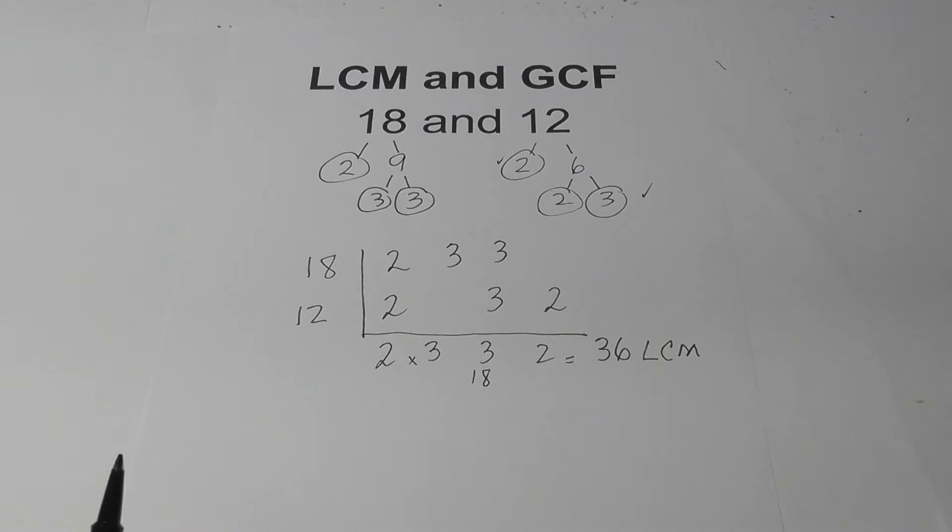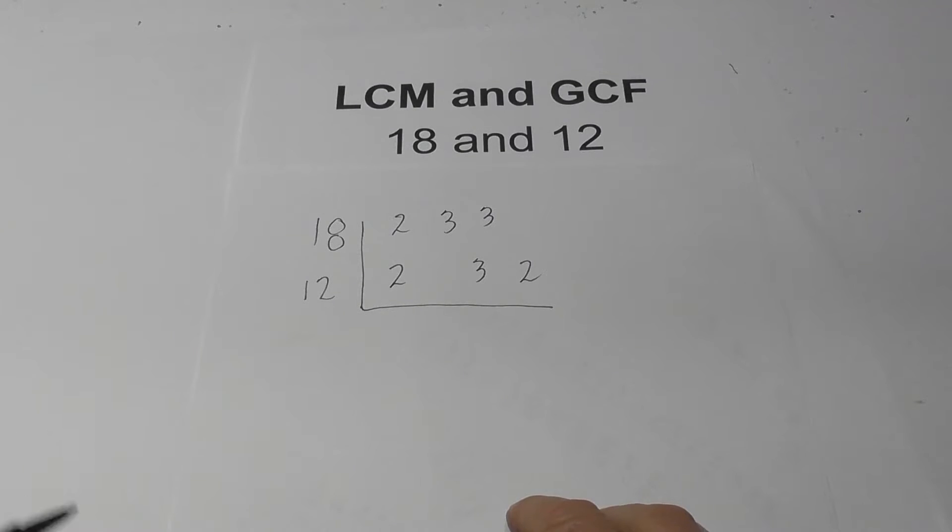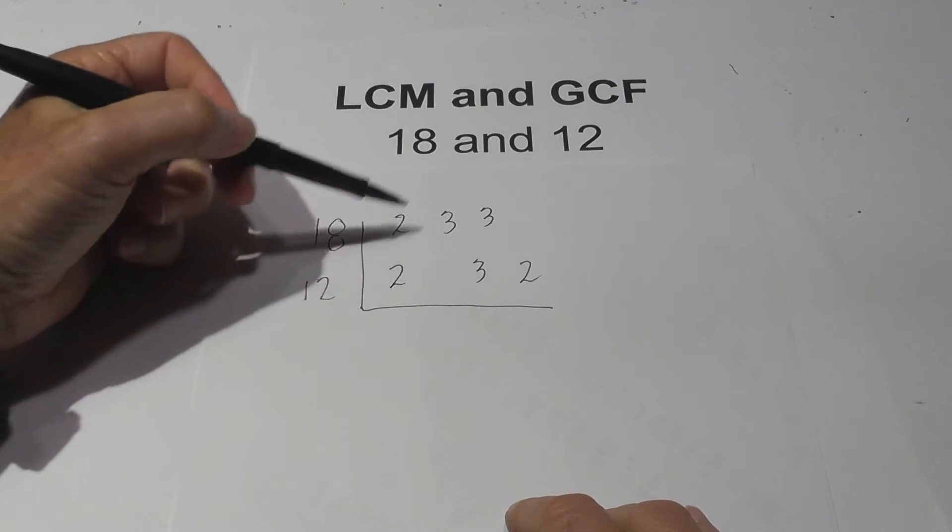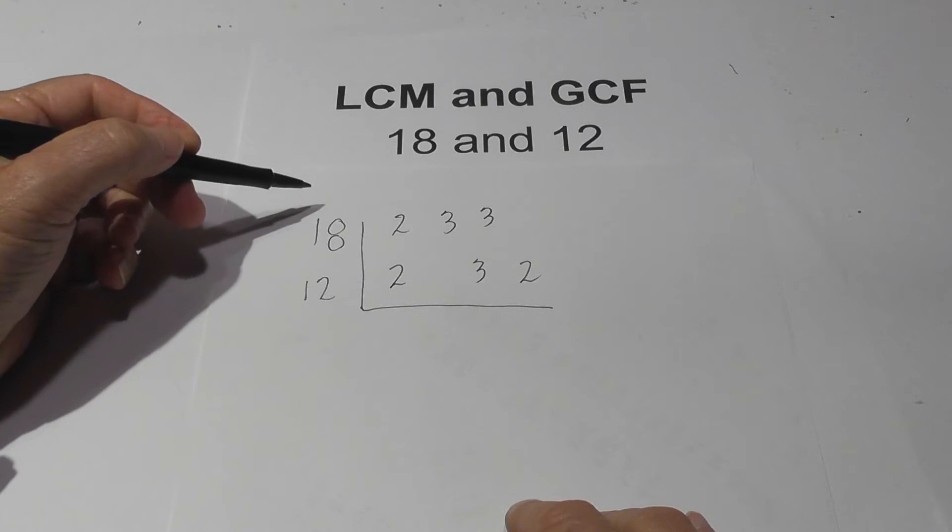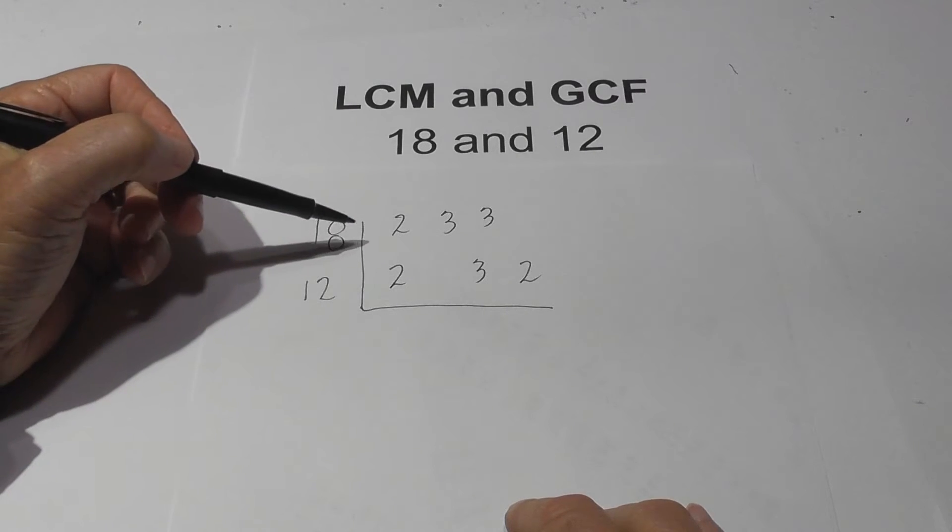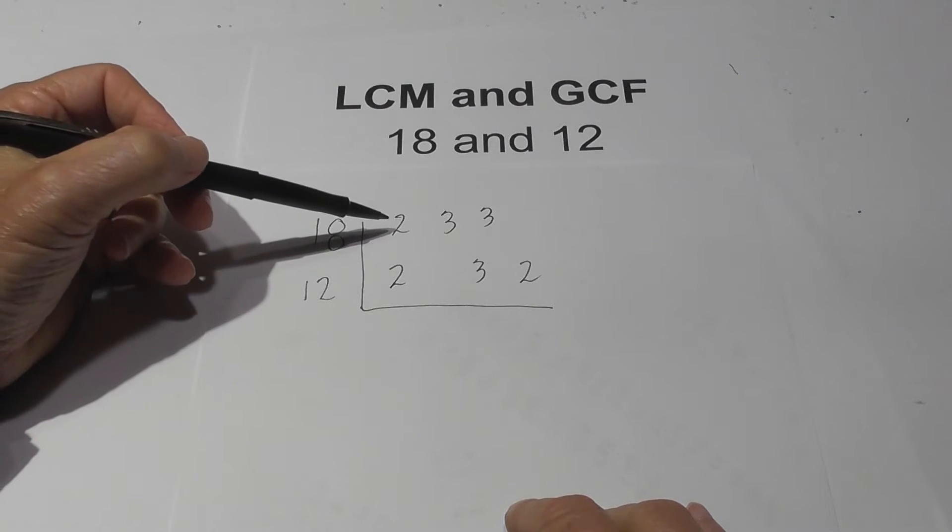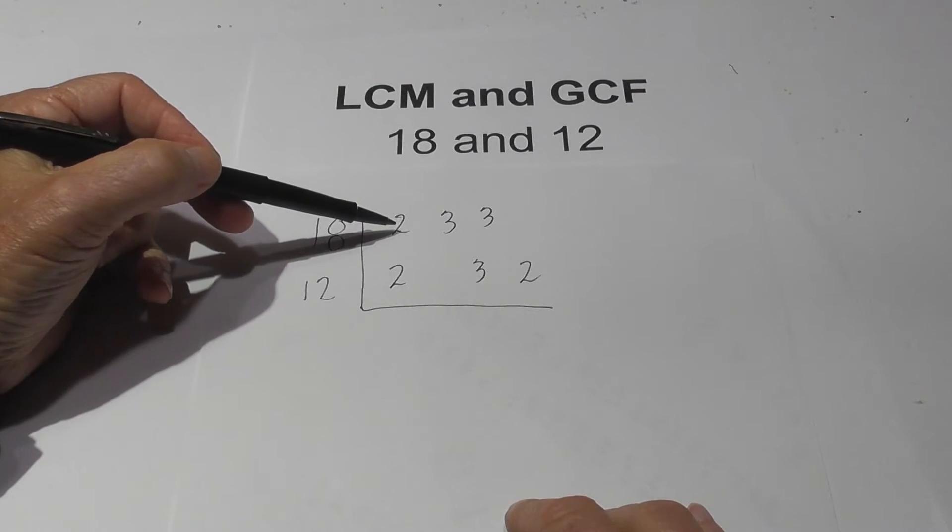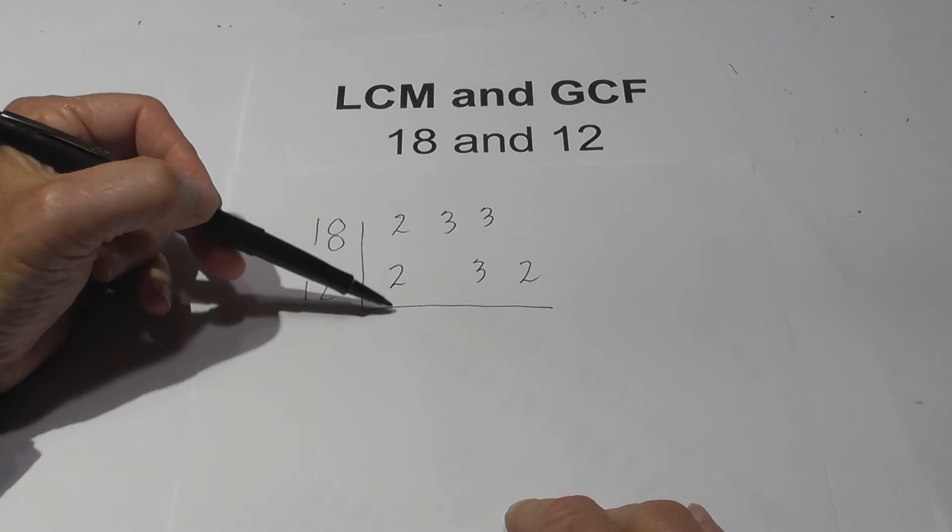Now let's work on the GCF. Now if you notice I've written the same chart down here with all the prime numbers of 18 and 12. The rule for the GCF or greatest common factor is if you have the same prime number in both numbers 18 and 12 then you bring it down.